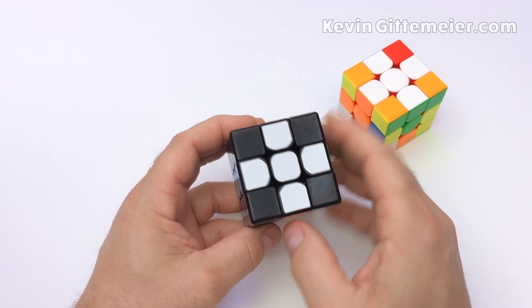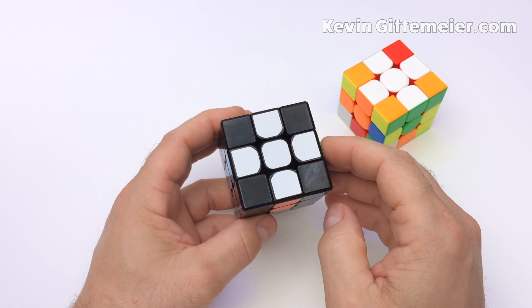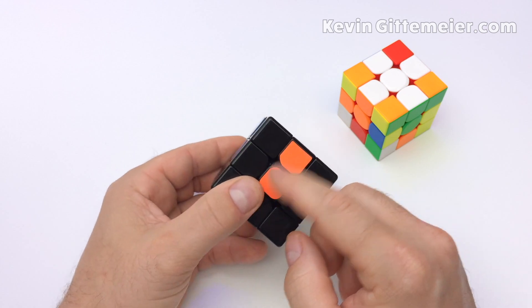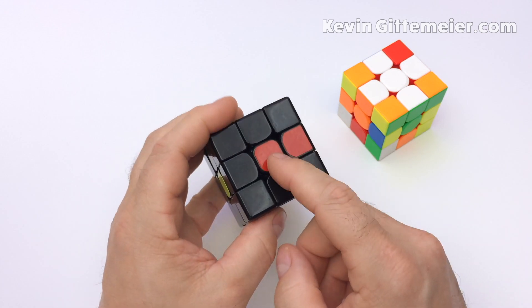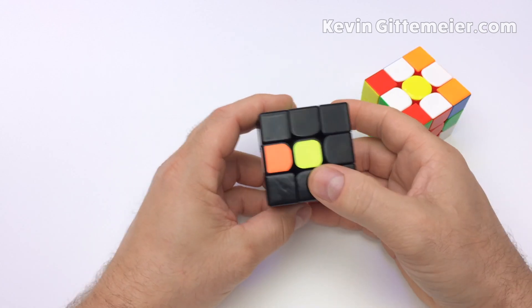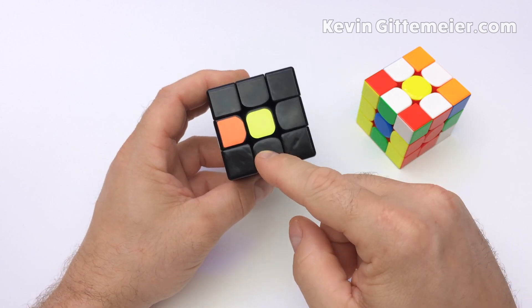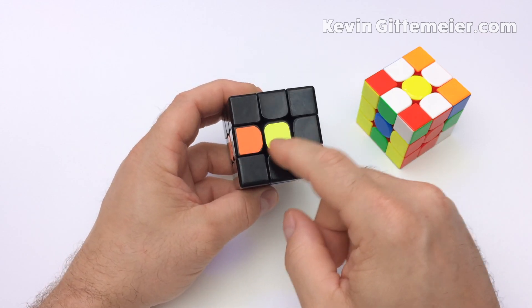We must first form a white cross on the bottom by placing the four white edge pieces in the bottom layer with the adjacent colors matching their centers. The beginner method to do this is to place all the white edge pieces on the top with the yellow center sticker.